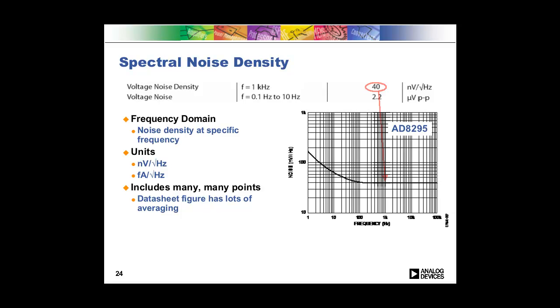One thing to point out is that we also spec the voltage noise density typically in our data sheet table, and that'll be specified at a specific frequency. For example, using the AD8295, we spec it at one kilohertz, and that is the exact same point. If you were to go look at the typical performance curve at one kilohertz, you'd see that it is at 40 nanovolts per root hertz. That number typically comes from the flat point of the graph. We're going to talk about one over F noise here in a little bit, and the number that's in the data sheet is always done in the white noise part of the graph.